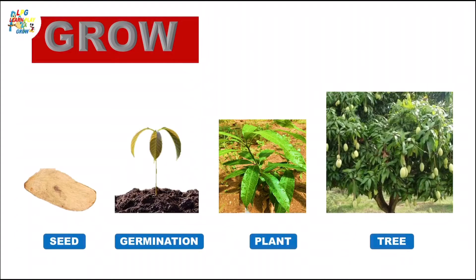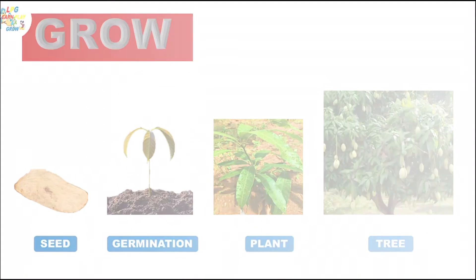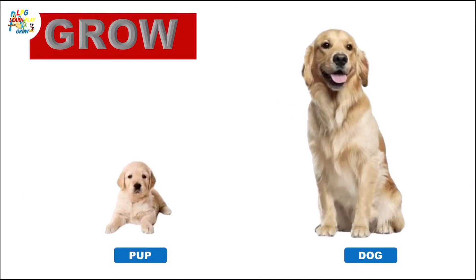First, we understand grow. What is grow? We can understand grow with this example. Here you see a seed of mango. The mango seed is growing and becomes a tree and gives us lots of mangoes. We have another example of grow — here you see two dogs. One is a pup and one is a mama dog. The pup is small and the mama dog is big.